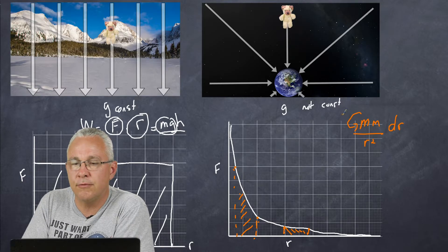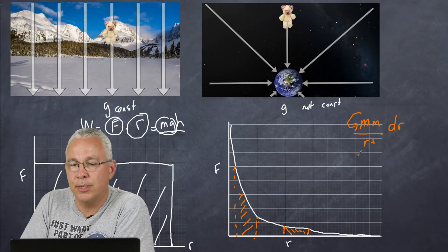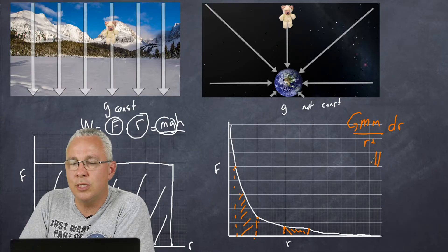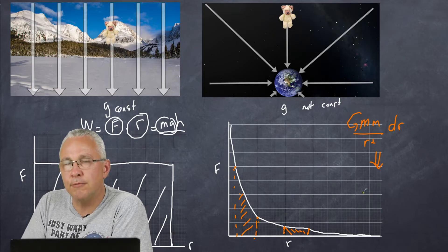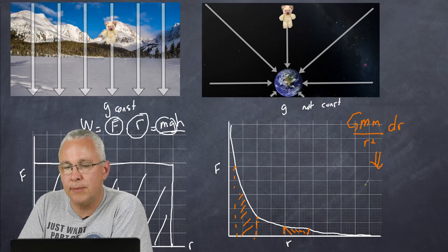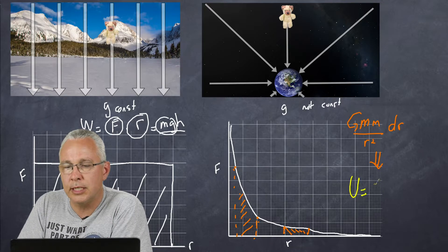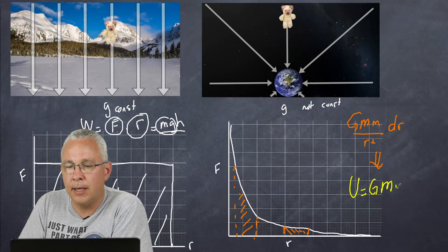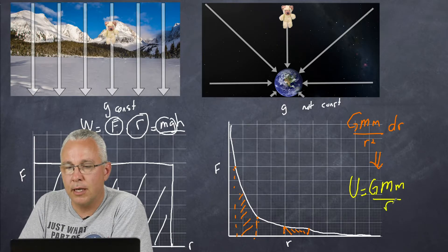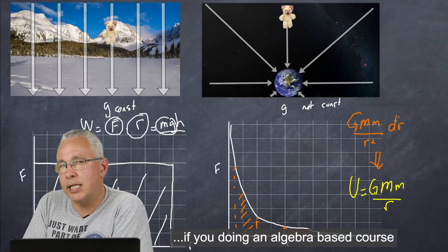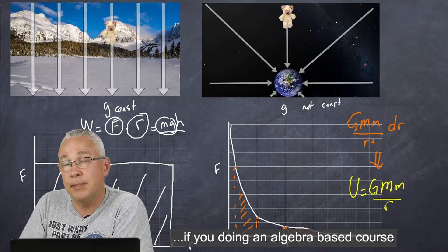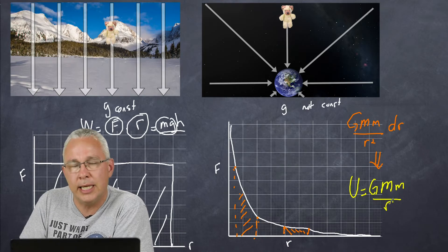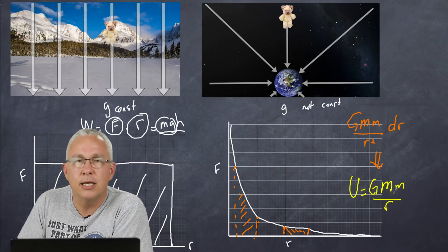When we do the integration process, we get, lo and behold, the formula for the gravitational energy, and that is U is equal to GMm over R. So you don't need to understand the process of how I got from the orange bit to the yellow bit, you just need to know that the yellow bit is really about determining the area under the graph, which is, in this case, the work done.